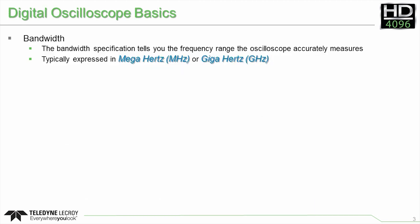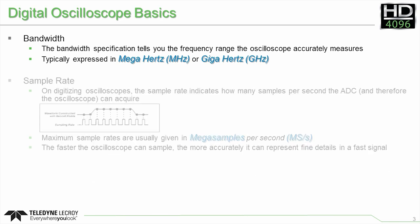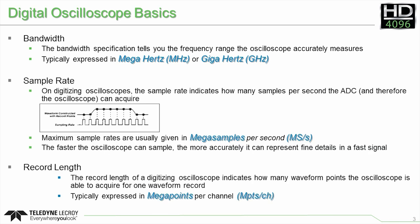Modern oscilloscopes have a few key banner specifications: bandwidth, sample rate, and record length. For years, oscilloscope manufacturers have developed innovative technology to improve all three of these key specifications, allowing engineers to capture higher frequency signals at faster rates and for longer periods of time. But for too long, one key banner specification has been overlooked: ADC resolution.